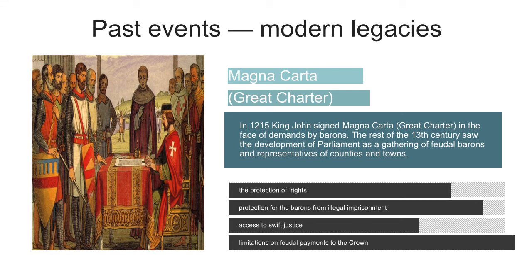Magna Carta has been interpreted throughout English history as guaranteeing certain political and civil liberties. It promised the protection of church rights, protection for the barons from illegal imprisonment, access to swift justice, and limitations of feudal payments to the crown.